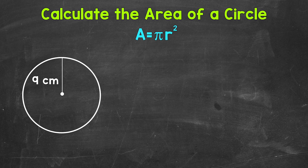Pi is a constant, so it's the same for all circles. Pi is irrational — it goes on forever — so we are going to use an approximate rounded version of pi: 3.14.